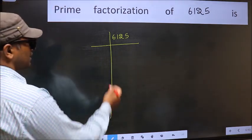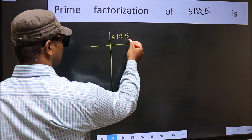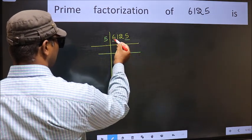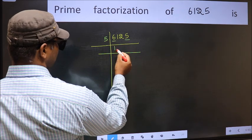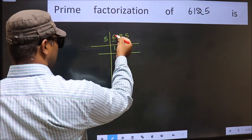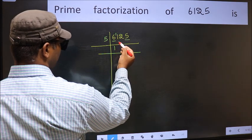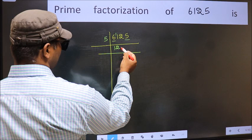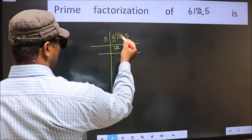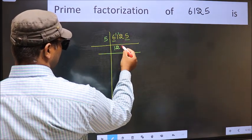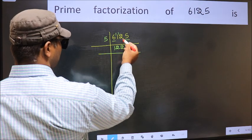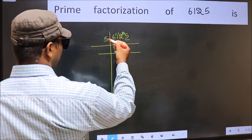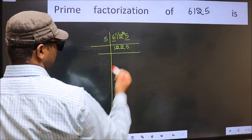Next, in this number, the last digit is 5, so take 5 as the divisor. First number 6 — a number close to 6 in the 5 table is 5 once 5. 6 minus 5 is 1, carry forward to get 11. A number close to 11 in the 5 table is 5 twos is 10. 11 minus 10 is 1, carry forward to get 12. A number close to 12 in the 5 table is 5 twos is 10. 12 minus 10 is 2, carry forward to get 25. When do we get 25 in the 5 table? 5 fives is 25.